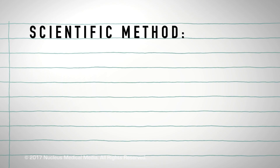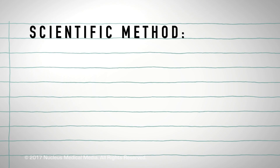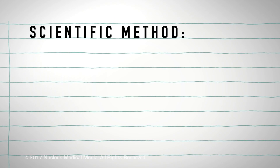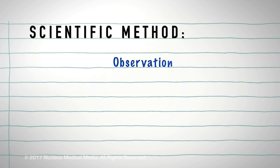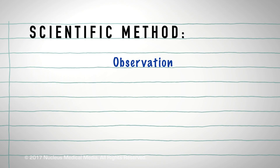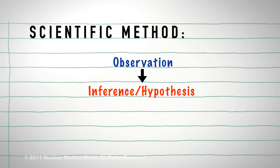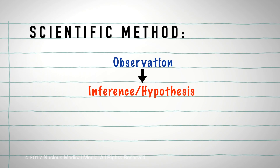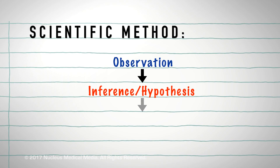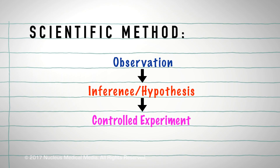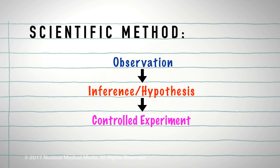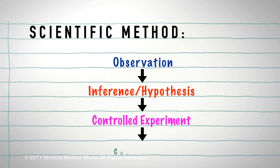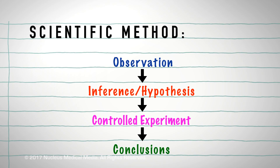The basic steps of the scientific method are making an observation, forming an inference and developing a hypothesis, conducting a controlled experiment, and drawing conclusions.